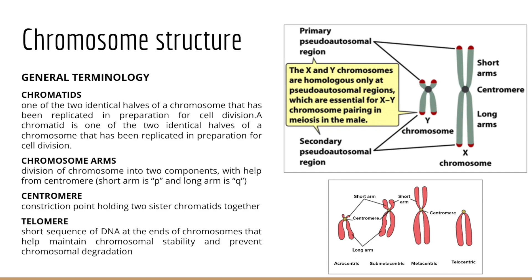Before we move too far into the chapter, I want to introduce chromosome structure. The X chromosome is considerably larger than the Y chromosome. The X chromosome holds about 1,500 genes, of which about 230 are protein-encoding. In contrast, the Y chromosome holds many fewer genes — somewhere on the order of 600, of which 22 are male-specific genes. Here we see chromosomes in their duplicated form with sister chromatids, which are identical copies connected by centromeres.